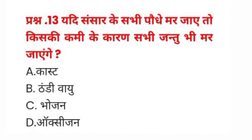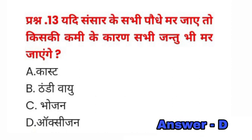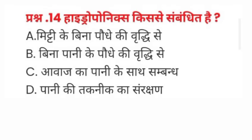Question number thirteen: यदि संसार के सभी पौधे मर जाएं तो किसकी कमी के कारण सभी जन्तु भी मर जाएंगे? A) कास्ट, B) ठंडी वायु, C) भोजन, D) ऑक्सीजन। इसका सही जवाब D) ऑक्सीजन होगा।